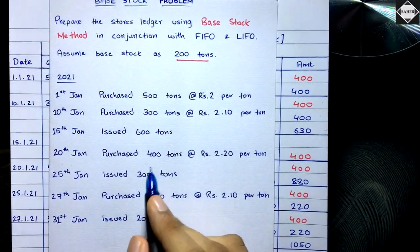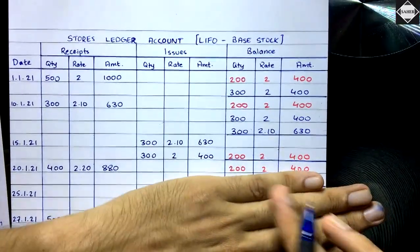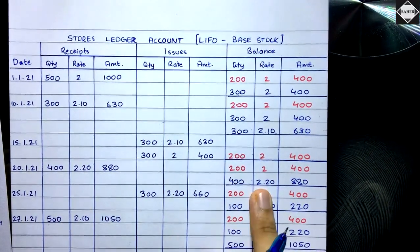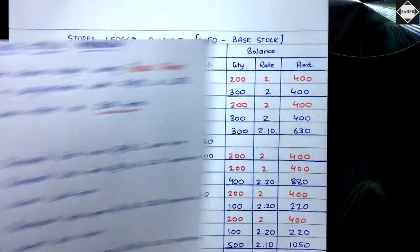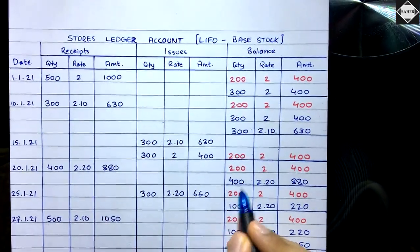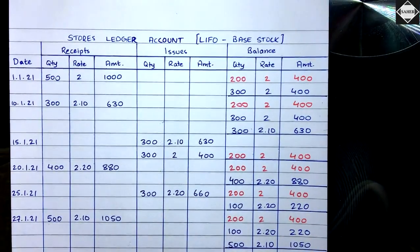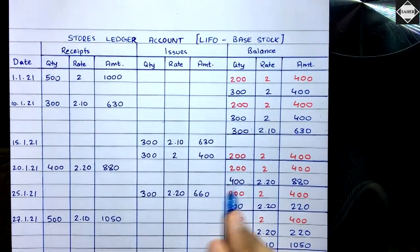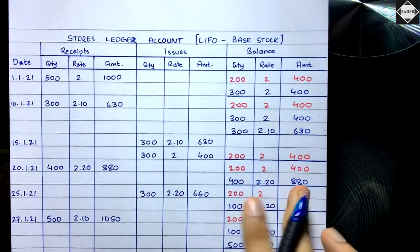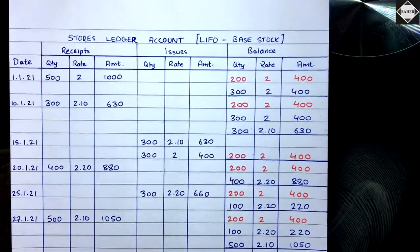On 20th January, purchased 400 tons at ₹2.20. Draw a line, copy the balance below, then add new purchase: 400 × ₹2.20 = ₹880. On 25th January, issue 300 tons. With only one free lot (400 × ₹2.20), no FIFO/LIFO choice needed — take 300 from there: 300 × ₹2.20 = ₹660. Remaining: 100 × ₹2.20 = ₹220. Red ink base stock unchanged at 200 × ₹2 = ₹400.